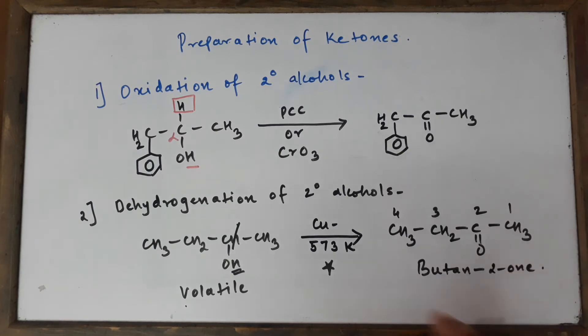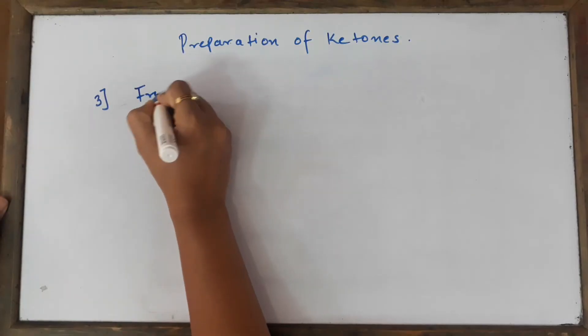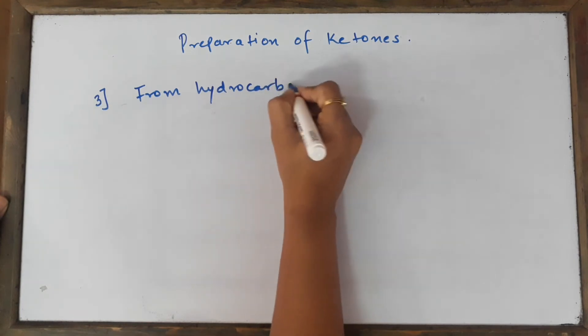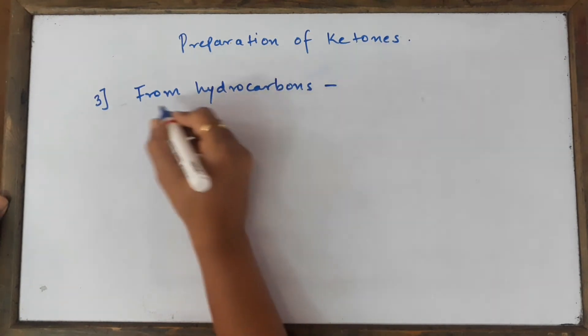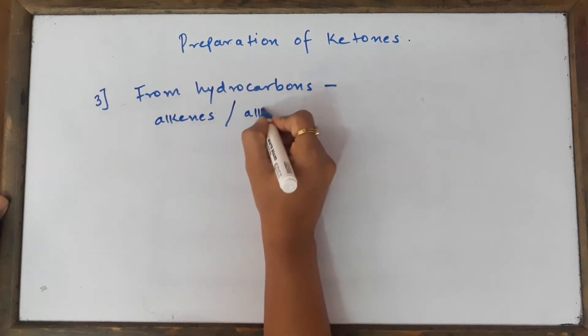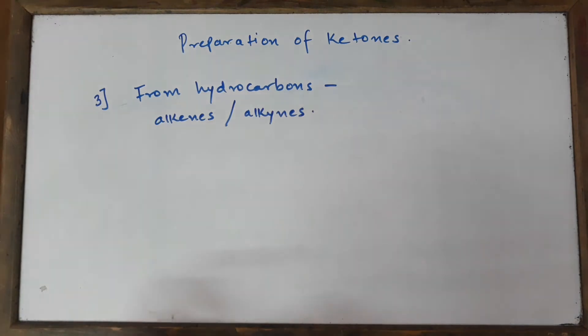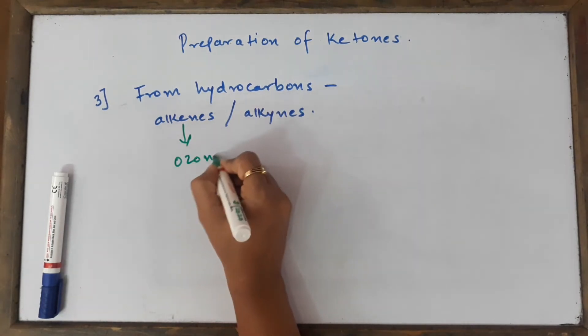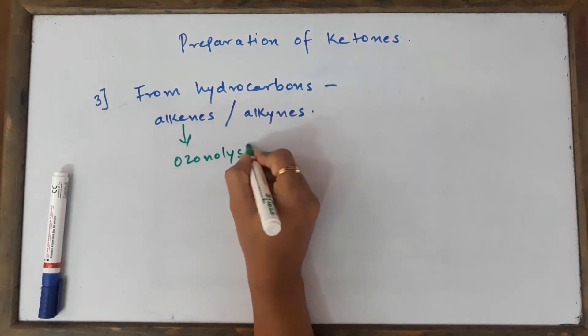Let's see the third method. The third method is from hydrocarbons, namely alkenes and alkynes. If you start from alkenes—that is the double bonded compounds—they are going to give you products which can be aldehydes or ketones, and the technique we are going to use is ozonolysis.